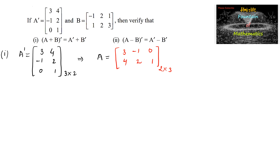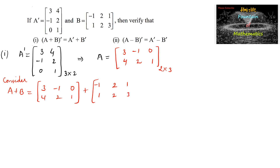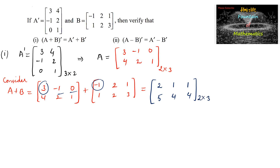Let us find A plus B. A plus B equals matrix A [3, -1, 0; 4, 2, 1] plus matrix B [-1, 2, 1; 1, 2, 3]. Adding corresponding elements: 3 + (-1) = 2, -1 + 2 = 1, 0 + 1 = 1, and 4 + 1 = 5, 2 + 2 = 4, 1 + 3 = 4. So A + B = [2, 1, 1; 5, 4, 4], a 2×3 matrix.